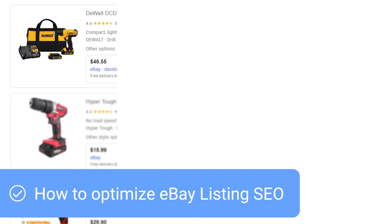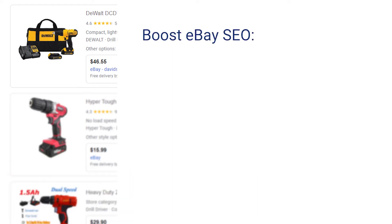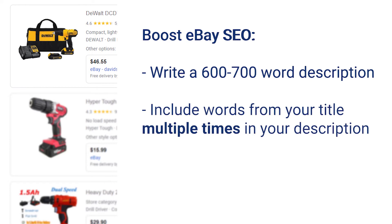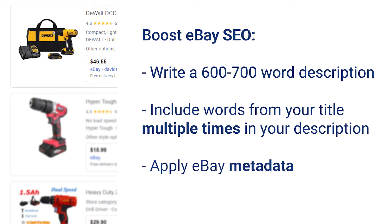There are three basic ways to boost SEO in your listings. You can write a description of 600 to 700 words, and include words and phrases from your title multiple times in your description. And finally, apply eBay metadata.